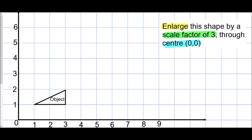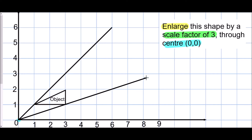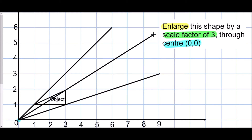To decide where the new shape is going to be, the first thing I want to do is mark the center of enlargement at zero zero on the graph. Then I'm going to draw what are known as rays, going through the corners of the shape, drawing them as far as I can — through one corner, the next corner, keeping everything as neat as possible, and finally through the third corner as well.